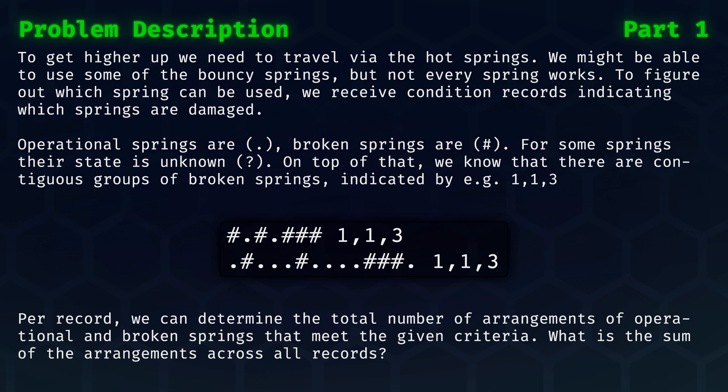This means that there is one broken spring, then another broken spring, and then a group of three broken springs. Per record, we can determine the total number of arrangements of operational and broken springs that meet the given criteria. The key question for part one then becomes, what is the sum of all the possible arrangements across all records?